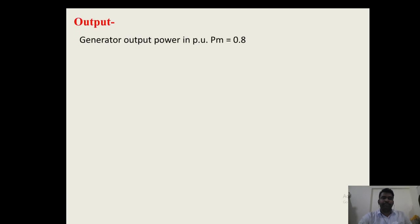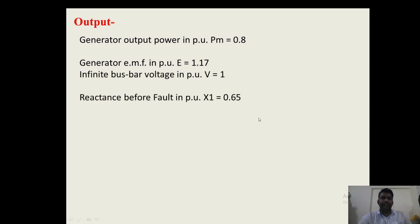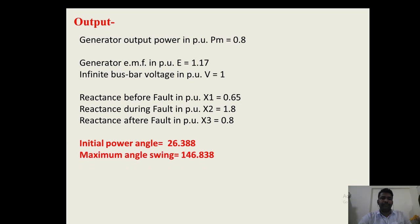When the program is run and inputs are entered — generator output power Pm = 0.8, generator EMF E = 1.17, infinite bus voltage V = 1, X1 = 0.65, X2 = 1.8, X3 = 0.8 — the output is: initial power angle = 26.38°, maximum angle swing = 146.83°, critical clearing angle = 98.83°.